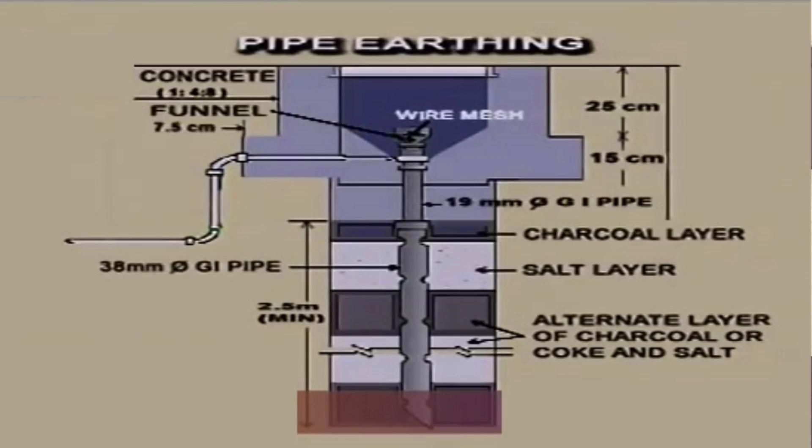We are going to do a lot of work related to earthing — things like plate and pipe. We have a layer: a layer of salt, charcoal, and weed. We have to do that properly.